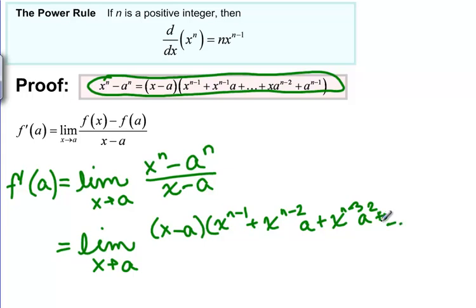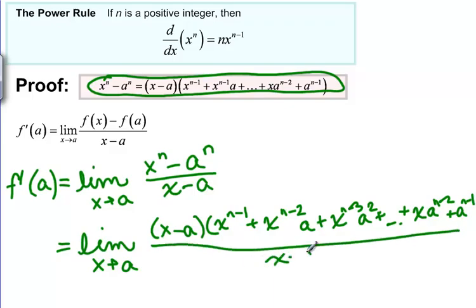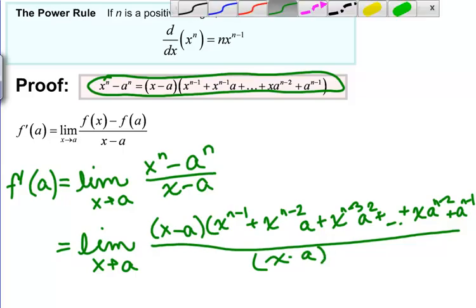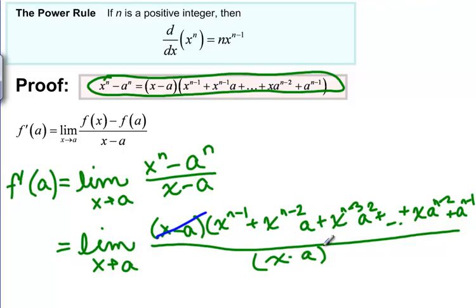And this pattern just keeps going until we get to X A to the N minus 2 plus A to the N minus 1. And this is all over X minus A. But this means that the X minus A's will actually cancel out of top and bottom. So we're left with this big long string of X's and A's.